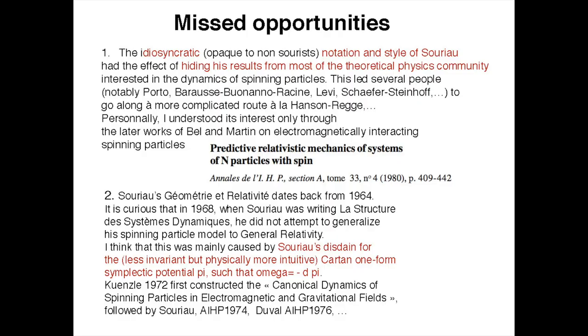As a consequence of that, I think the first person who applied Souriau's idea to the spinning particle in general relativity was Künzle in 1972, and then it was later followed by Souriau 1974 and Duval 1976.